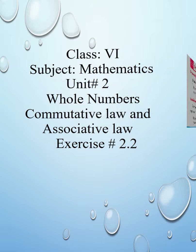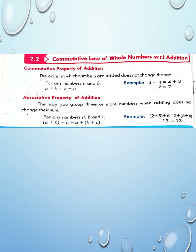What is commutative law? Commutative law of whole numbers with respect to addition. 'Commutate' means to change — the order in which numbers are added does not change the sum. So when we change the order of numbers, whether you have A plus B or B plus A, both answers are equal.